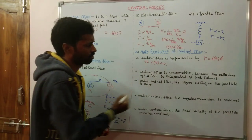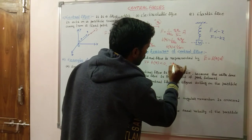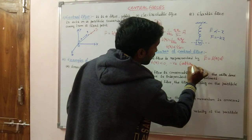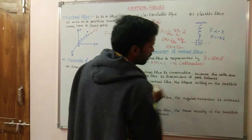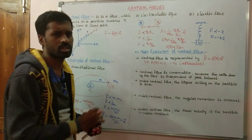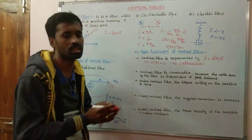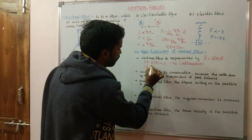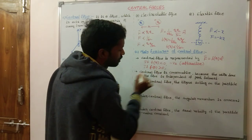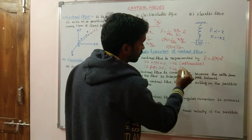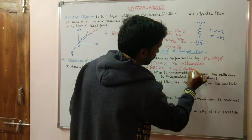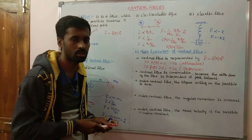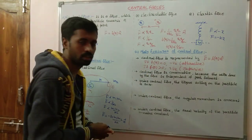If f(r) is less than zero, it means the value is negative, so our central force is an attractive force. If f(r) is greater than zero — that is, positive — then our central force is a repulsive force. So the first characteristic: if f(r) < 0, central force is attractive; if f(r) > 0, central force is repulsive.